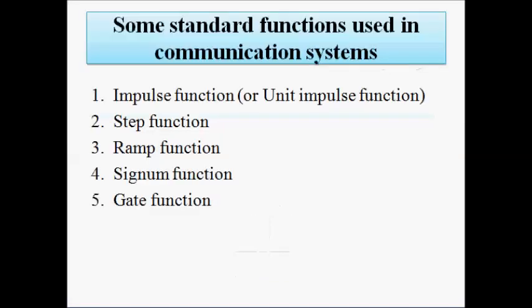Some standard test signals used in communication systems are the impulse function or unit impulse function, step function, ramp function, signum function, and gate function. When we have an unknown system about which we have no idea, we apply these input signals as test signals and observe the output, making it easier to determine the transfer function of the system using Laplace transform, Fourier transform, or Z-transform techniques. That is the main idea — to get the output response of an unknown system.